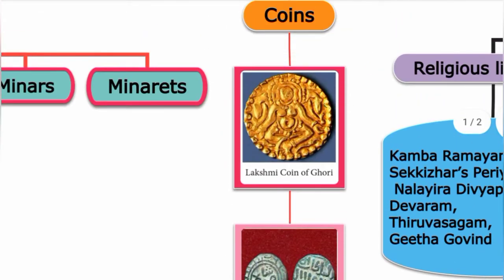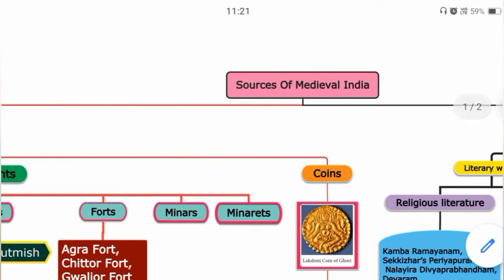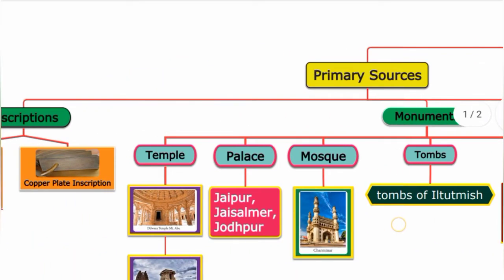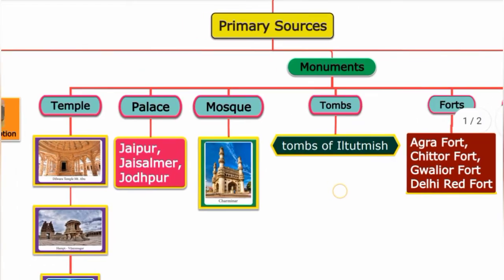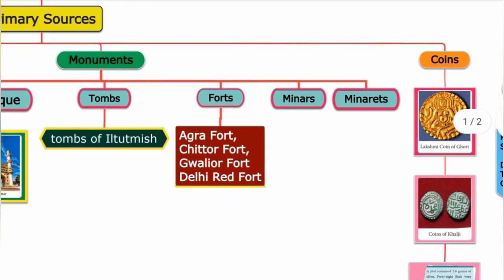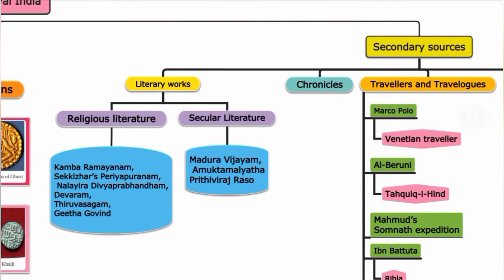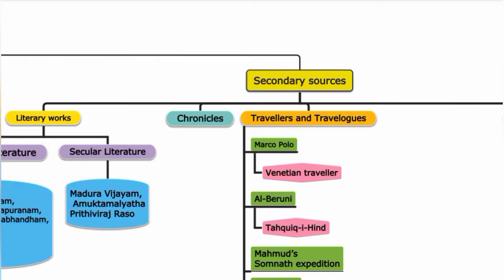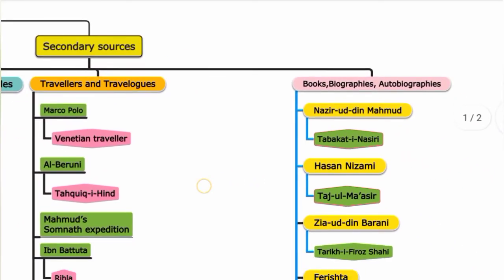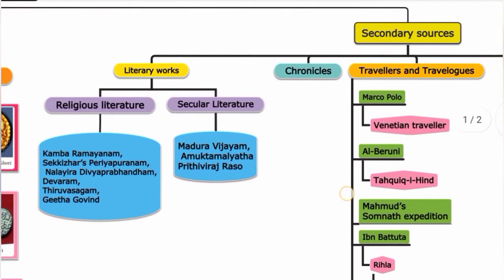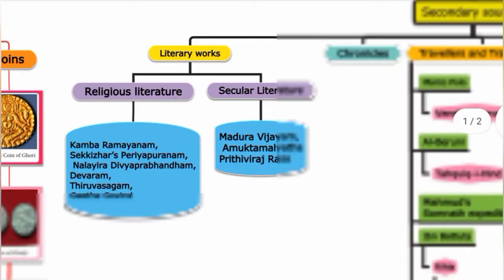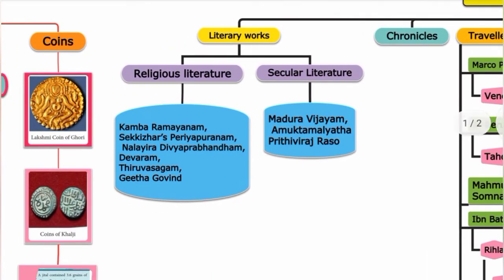So in total, primary sources include inscriptions, monuments, and coins. Now for secondary sources, we look at written works: literary works, chronicles, travelers and travel logs, books, biographies, and autobiographies.